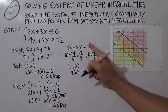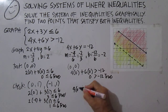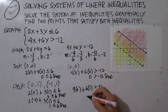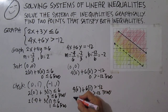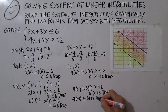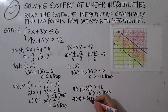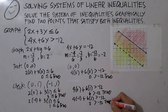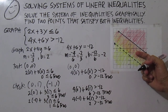Now check both points in the second inequality. For (0, 1): 4 times 0 plus 6 times 1 is greater than negative 12 — 6 is greater than negative 12, true. For (-1, 1): 4 times negative 1 plus 6 times 1 is greater than negative 12 — negative 4 plus 6 is 2, which is greater than negative 12, also true. That means the graph is correct.